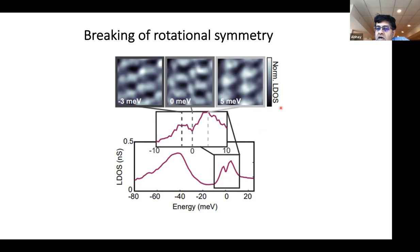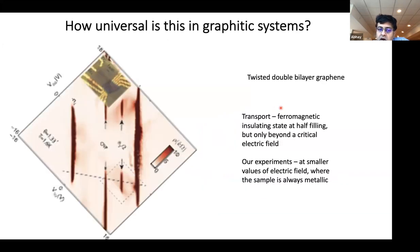Because we could see this clearly as a function of doping within the same sample, we had good confidence this was not coming from external strain — it was intrinsic. It goes away when you move the doping away from that particular value. At the time, our samples were limited to only about 8 to 10 unit cells, which was not all that satisfying. Other groups who observed the same effect published similar data.